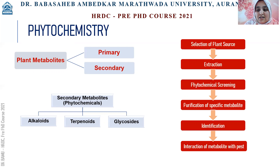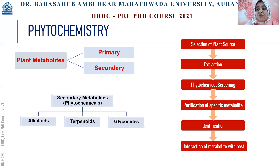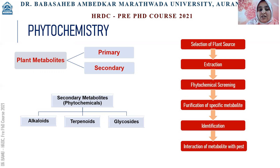The procedural steps required for the experimentation are: identification of a suitable plant source, then extracting the chemicals from that plant source, then phytochemical screening — checking which chemicals are present in that source — then purifying a specific metabolite, identifying the functional group present in that metabolite, and then interacting that metabolite with the pest and observing its impact on the life cycle of the pest.